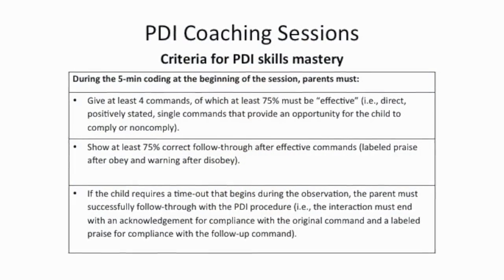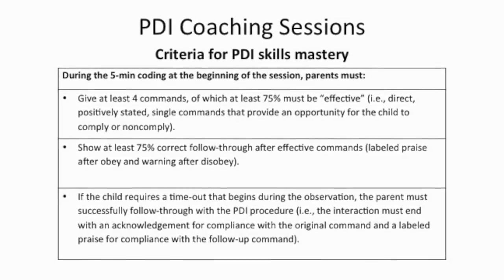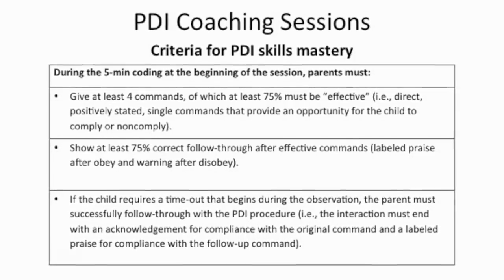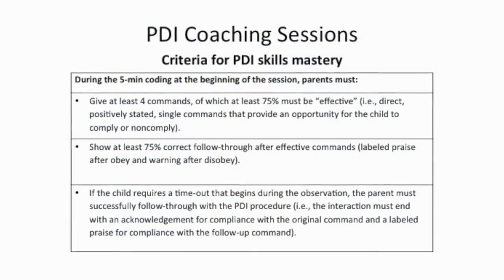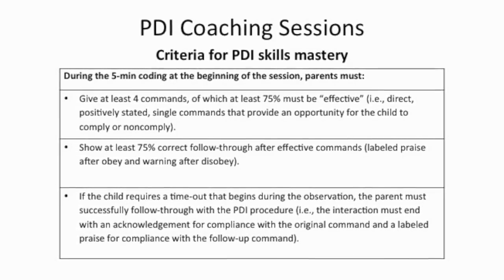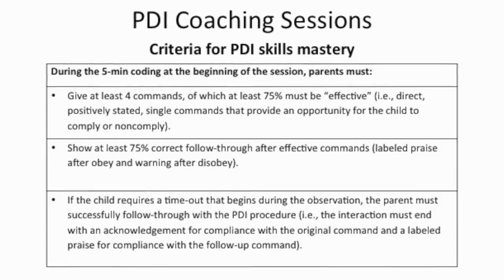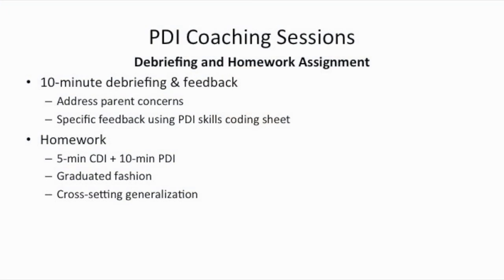The mastery criteria for PDI skills include: giving at least four commands of which at least 75% must be effective per the eight rules; showing at least 75% correct follow-through after effective commands — labeled praise for obeying and the timeout warning for disobeying; and if a timeout is required during the observation period, the parent must successfully follow through with the procedure, or demonstrate it via role play if the child doesn't provide the opportunity.